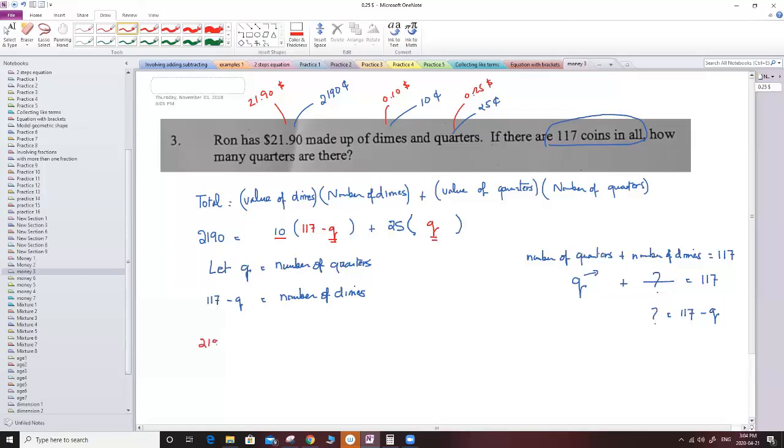So I'm going to say 2,190 equal to, I'm going to use the distributive property, so 10 times 117, it's going to be 1,170 minus 10q plus 25q. Now I can combine the like terms, and I need to transfer the 1,170 to the other side, so it's going to be 2,190 minus 1,170 equal to the negative 10q staying as it is and the 25q staying as it is.